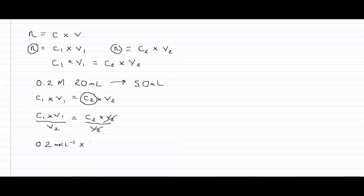Now like with other calculations we've done, we have to express volume in terms of liters not milliliters. So we write this as 0.02 liters and we're dividing all of this by V2 which is 50 mils again expressed in liters, it's 0.05 liters.